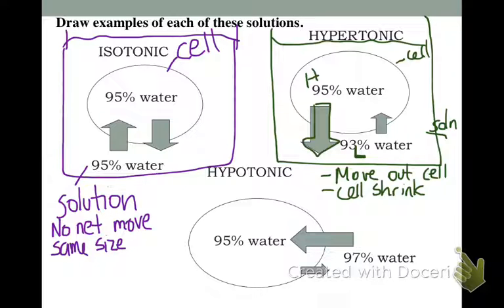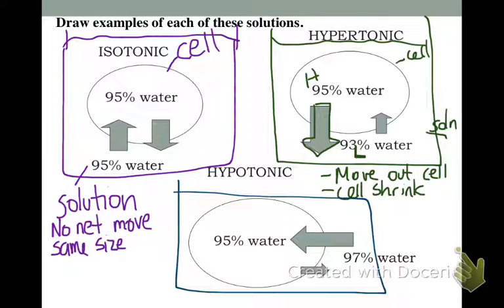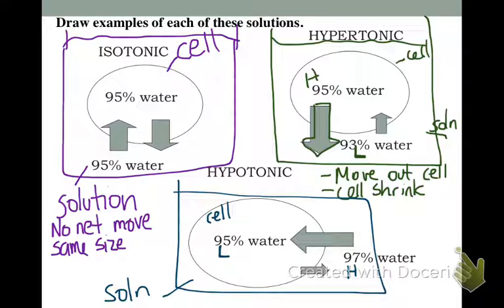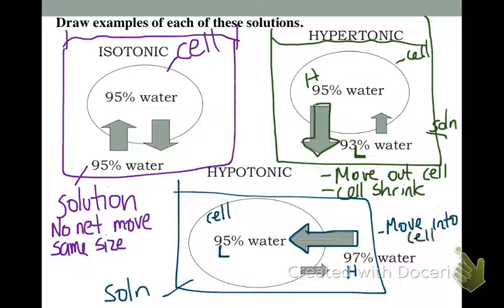For hypotonic: here is my cell, there is my solution. 97% water outside is higher than 95% inside. Go with the flow from high to low - high is outside, so my overall movement is going to move in. And what's going to happen to my cell? It's going to swell.